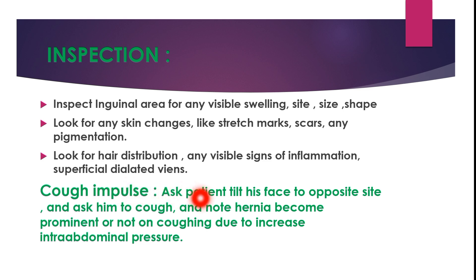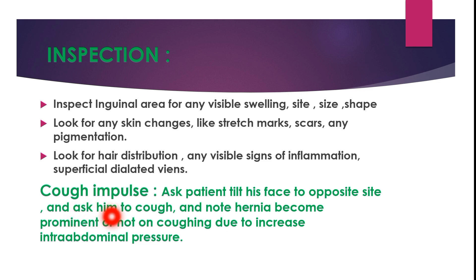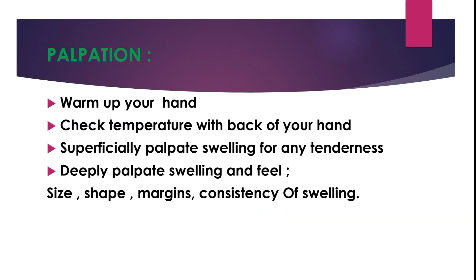Also note any superficial dilated veins. Similarly, during inspection we perform the cough impulse test. This is done by asking the patient to turn their face to the opposite side and cough. Note whether the hernia becomes more prominent, because on coughing there is an increase in intra-abdominal pressure which makes the hernia more prominent.